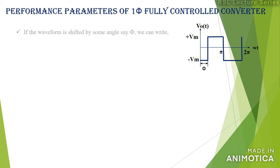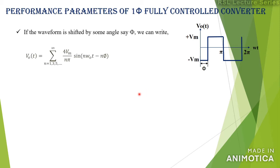Now for the same waveform, if we consider that it has been shifted by an angle of φ towards the right-hand side, the Fourier series becomes: V₀(t) = summation for n = 1, 3, 5, ... to infinity of (4Vm/nπ) sin(nω₀t − nφ). Since the waveform is shifted by angle φ, we include the term −nφ. This is the Fourier series for the shifted waveform.